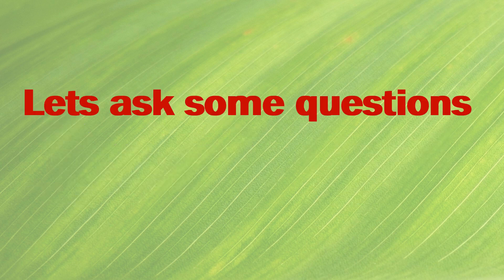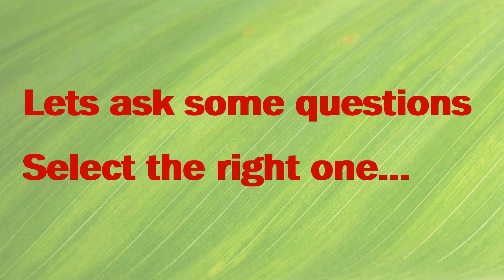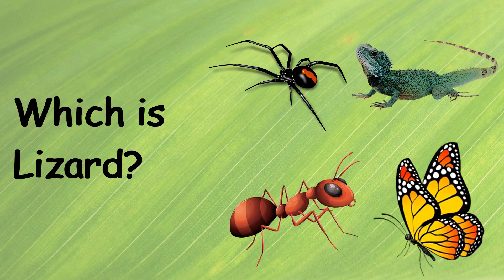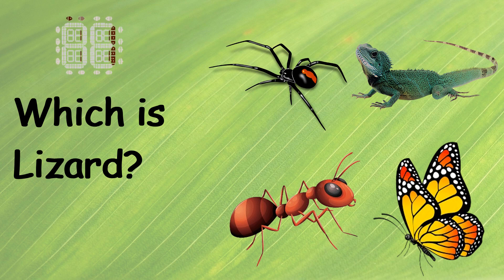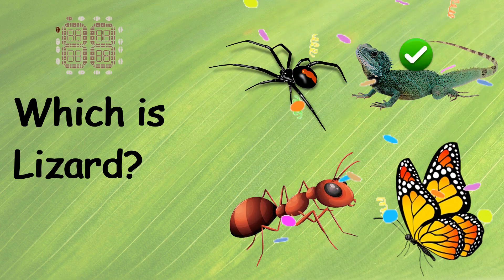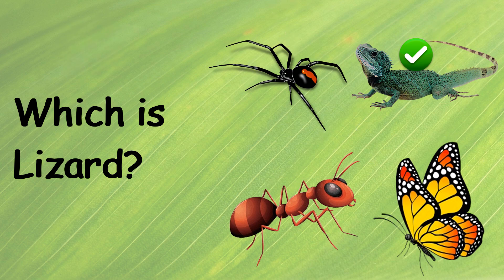Let's ask some questions. Select the right one. Which is Lizard? Ten, nine, eight, seven, six, five, four, three, two, one, zero. This is the right one.